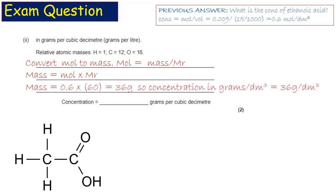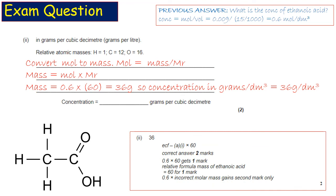I'm going to do 0.6 times 60. To get that 60, I've used the relative atomic masses they've given me and the formula of ethanoic acid, and that gives me 36 grams. So the concentration is 36 g/dm³ and there is the mark scheme there.